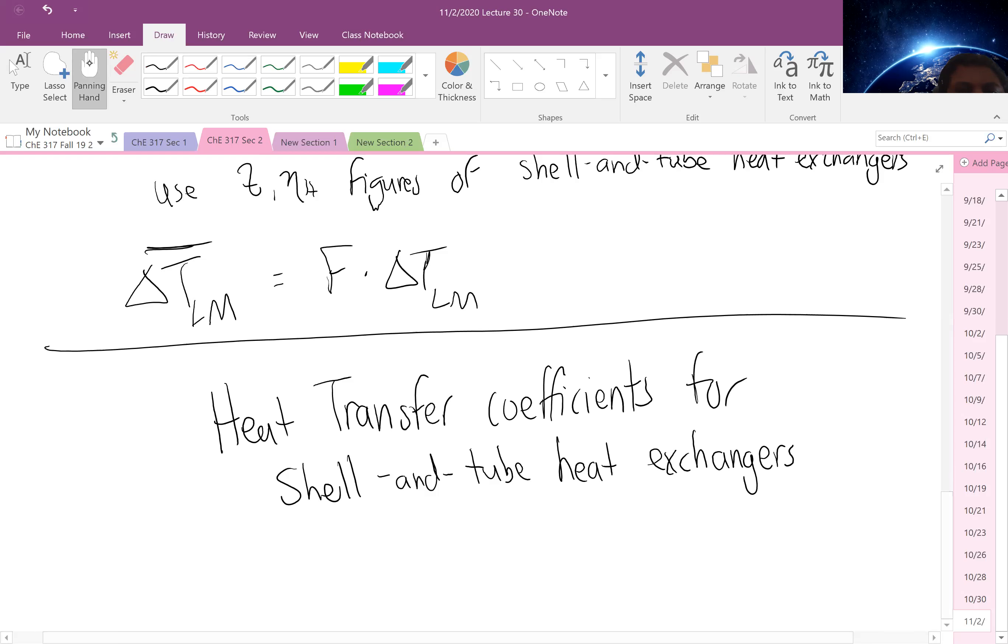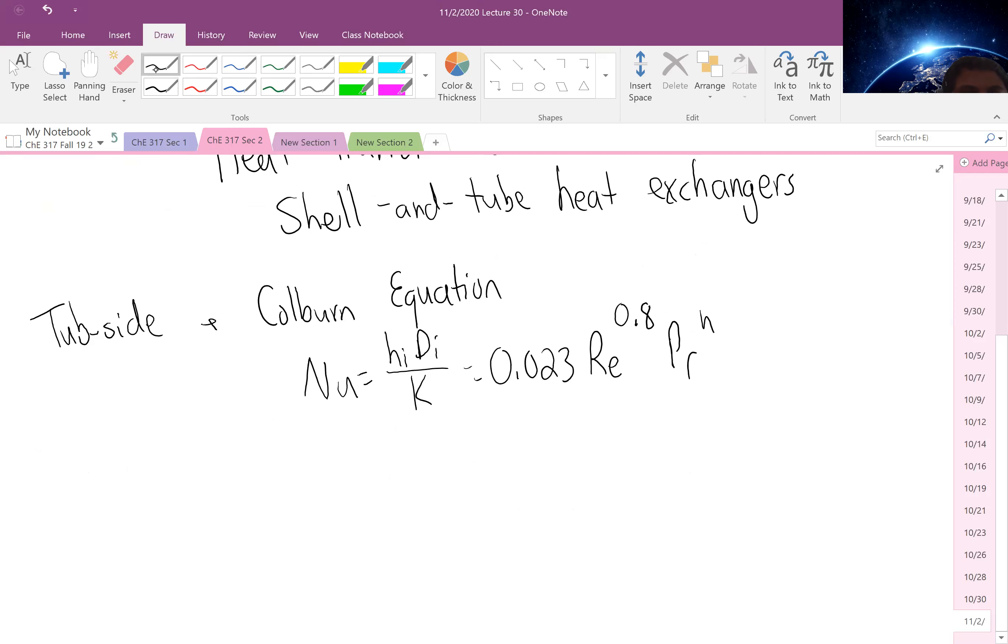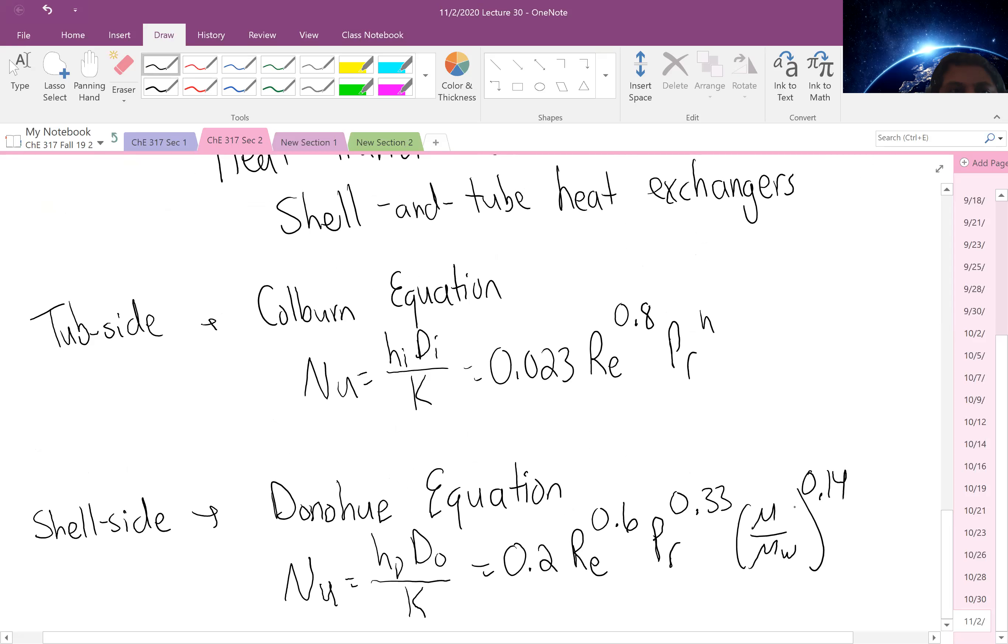So we looked at for the tube side, we rely on the Colburn equation that states our Nusselt is equal to H_I D_I over K equals 0.023 Reynolds to the 0.8 times Prandtl to the N. And then for the shell side, we use the Donahue equation. It states our Nusselt is equal to H_O D_O over K equals 0.2 Reynolds to the 0.6 Prandtl to the 0.33, and our mu relation to the 0.14 if we have significant temperature differences.